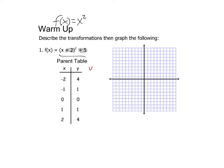Let me build a table. If x is negative 2, that's negative 2 plus 2, which is 0. 0 squared is 0, plus 5 is 5. Negative 1 plus 2 is 1, 1 squared is 1, plus 5 is 6. If x is 0: 0 plus 2 is 2, 2 squared is 4, plus 5 is 9. If x is 1: 3 squared is 9, plus 5 is 14. If x is 2: 4 squared is 16, plus 5 is 21.